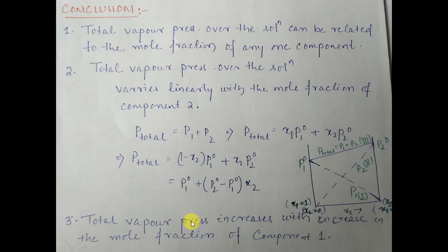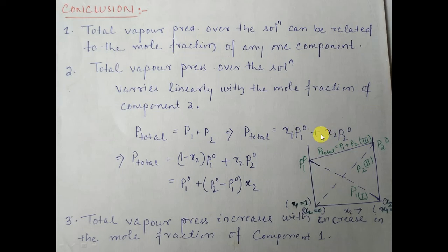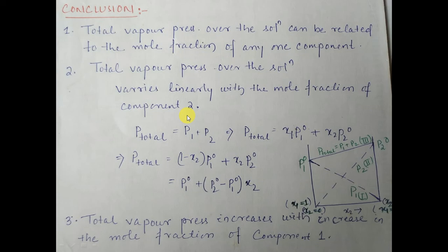The total vapor pressure can be related to the mole fraction of any one component. Writing total P = x1·P1° + x2·P2°, and since x1 + x2 = 1, we can express total vapor pressure in terms of x2 only. This means total vapor pressure varies linearly with the mole fraction of component 2.